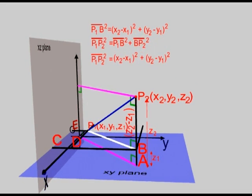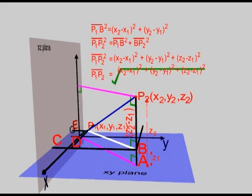We obtain P1P2 squared is equal to x2 minus x1 squared plus y2 minus y1 squared. Substitute for the value of BP2 squared, which is z2 minus z1 squared. P1P2 is equal to the square root of x2 minus x1 squared plus y2 minus y1 squared plus z2 minus z1 squared.